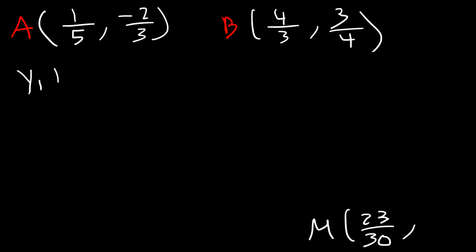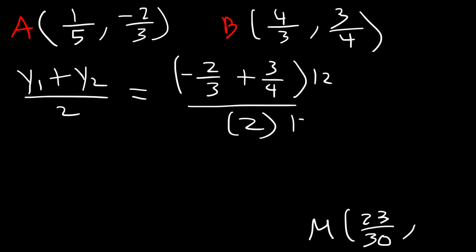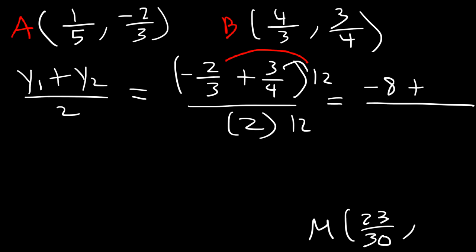Now let's do the same for the y-coordinates. y1 is -2/3 and y2 is 3/4, divided by 2. Multiply the top and bottom by 12 to clear the denominators. 12 times negative 2/3: 12 divided by 3 is 4, times 2 is 8 — so that's -8. Then 12 times 3/4: 12 divided by 4 is 3, times 3 is 9. The denominator is 2 times 12 = 24. Negative 8 plus 9 is 1, so the y-coordinate is 1/24. The midpoint between points A and B is (23/30, 1/24).